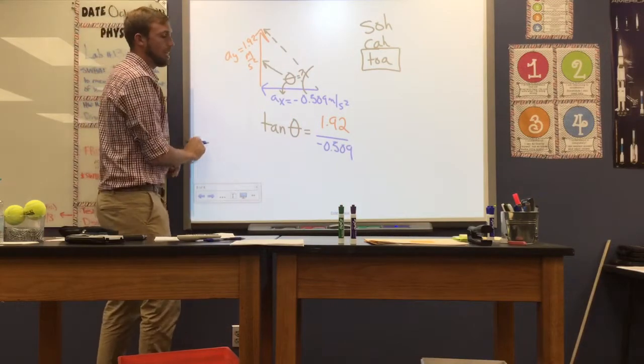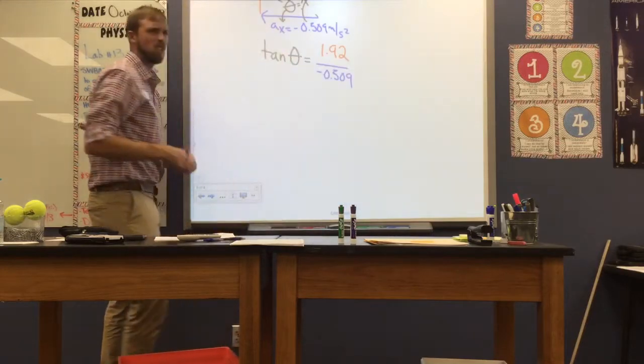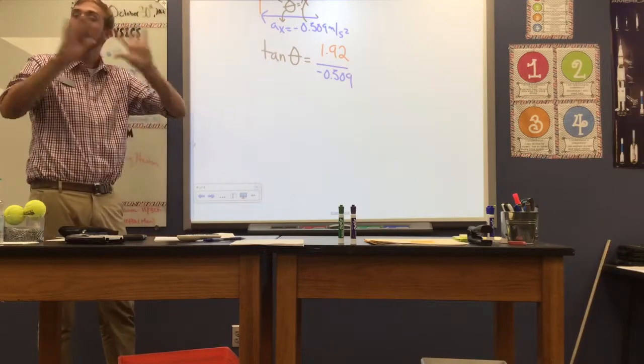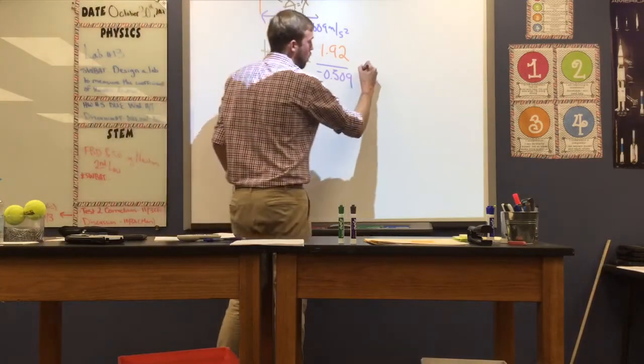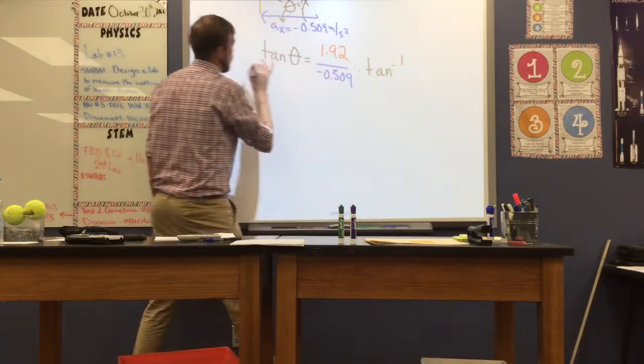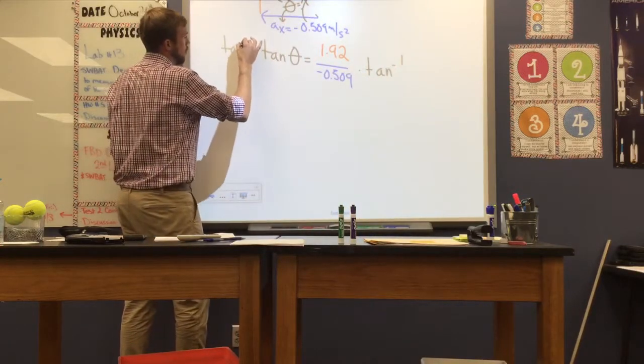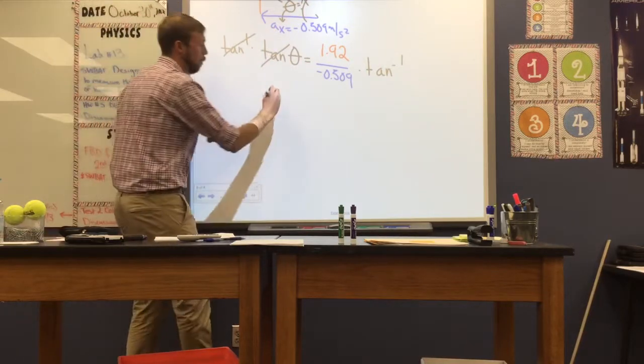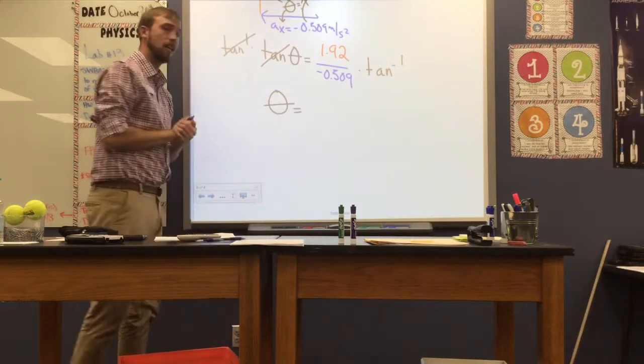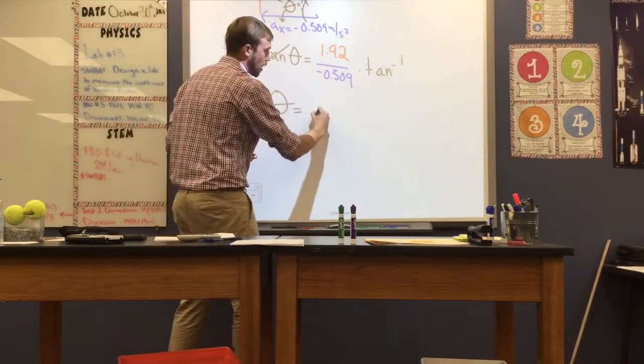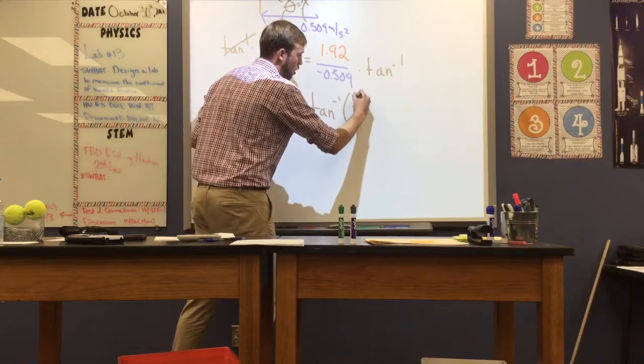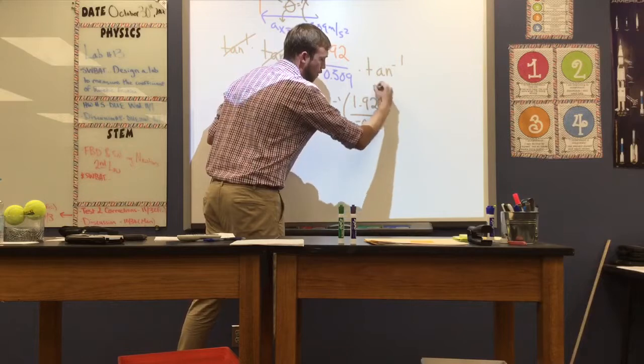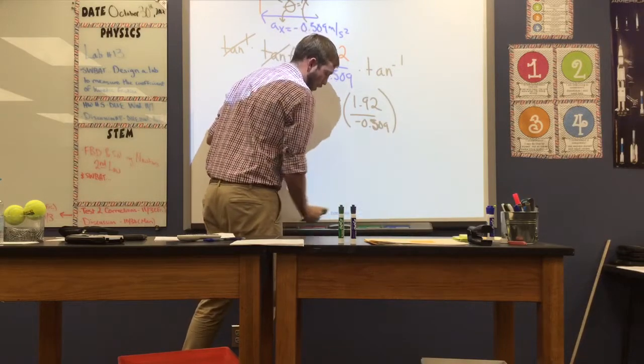Now if I want to get my angle theta by itself, I need to do what's called an inverse, if you remember us talking about those. And I've got to undo that tangent function to get theta alone. So to do so, I'm going to multiply by inverse tangent on both sides of my equation. That will undo or get rid of tangent on the left-hand side. And now we'll be left with an expression. It looks like this. Theta is equal to the inverse tangent of 1.92 over negative 0.509.